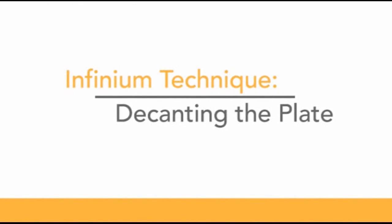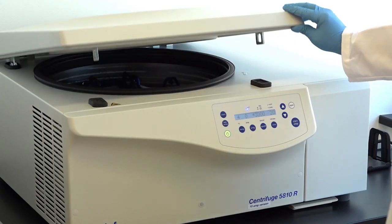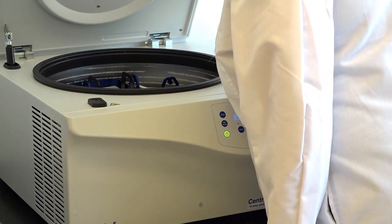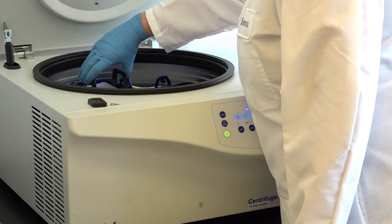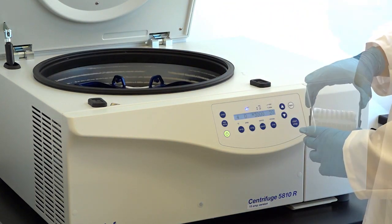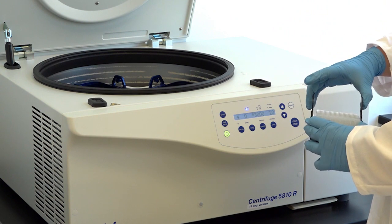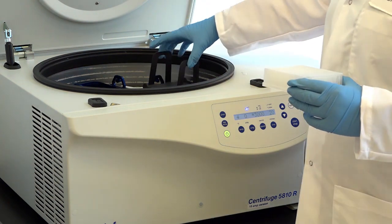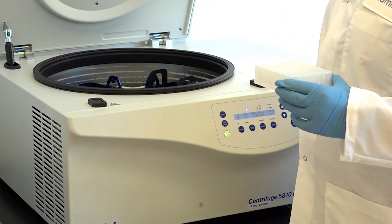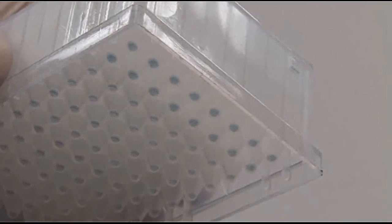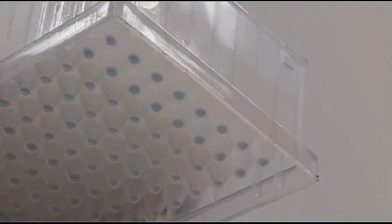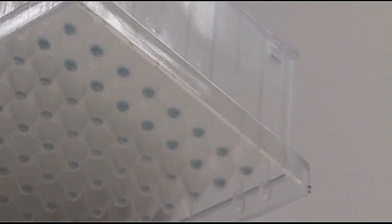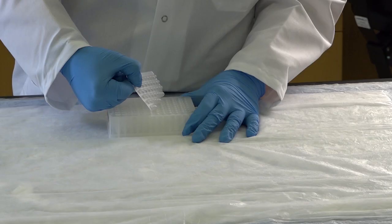In this step, we will look at the technique for decanting the supernatant from the pellet following the precipitation step. It is important to remove the amplification plate from the centrifuge immediately following the 20-minute spin described in the EUCs. Delays can cause the pellet to loosen and may lead to loss of sample. If a delay occurs, re-spin the plate prior to proceeding. This is a typical amplification plate following the precipitation step. The DNA pellets should be blue and clearly visible at the bottom of each well. The benchtop should have an absorbent pad ready for the decanting procedure.